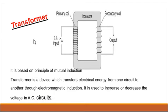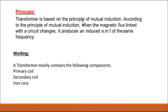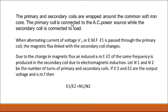According to the principle of mutual induction, when a magnetic flux linked with the circuit changes, it produces an induced EMF of the same frequency. A transformer consists mainly three components: the primary coil, the secondary coil, and the iron core. The primary and secondary coils are wrapped around a common soft iron core. The primary coil is connected to the AC power source, while the secondary coil is connected to the load.